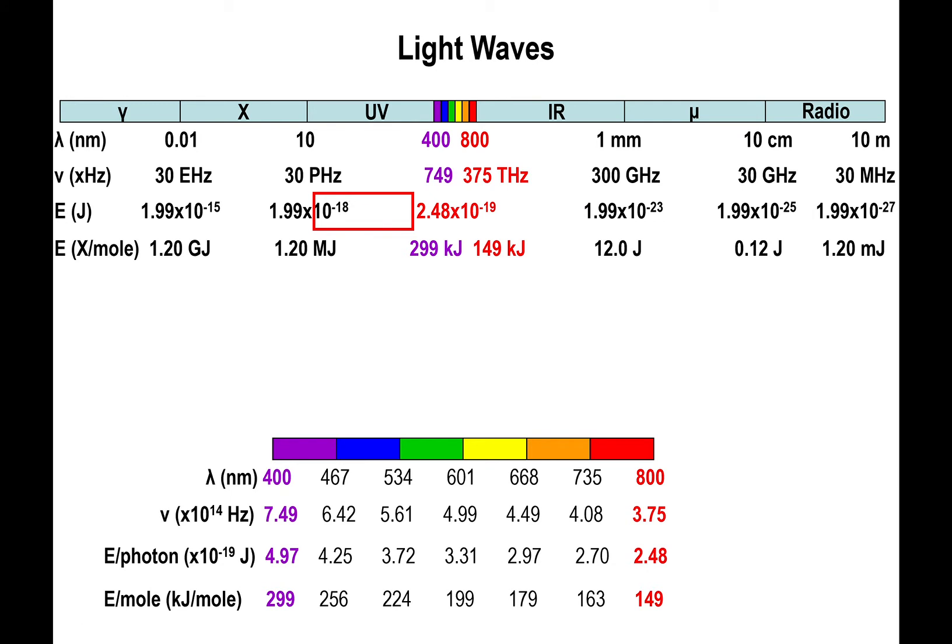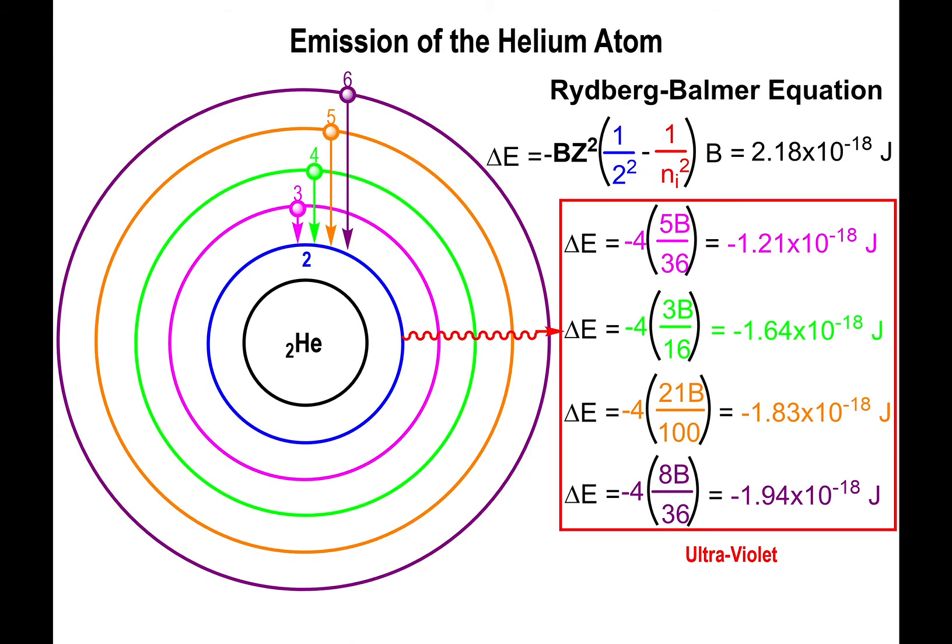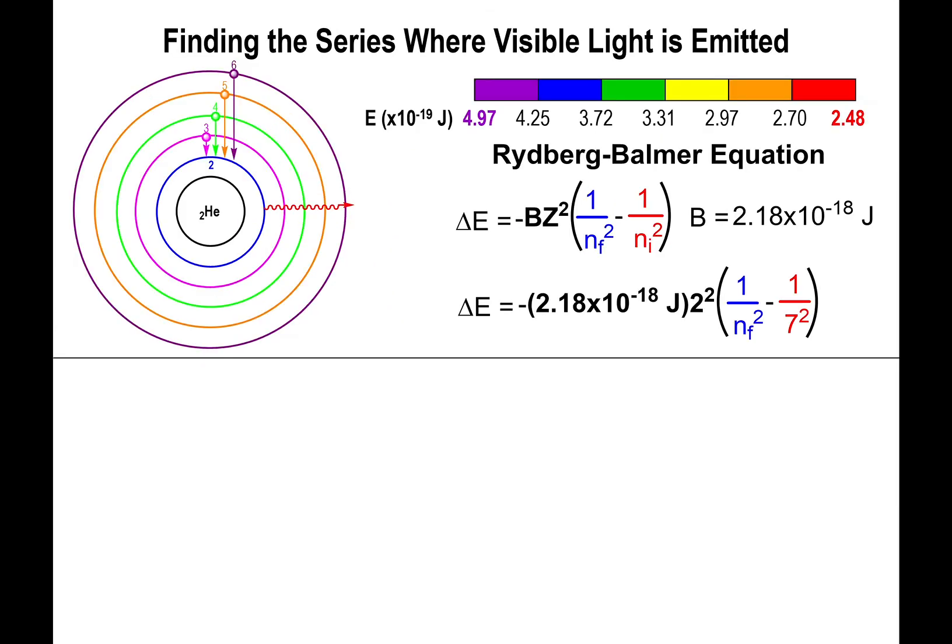So let's try to find out where visible light will actually be emitted. Now the process is kind of convoluted, you could say. There's a few other ways to do it, but I'll show you one. You could always plug in values for n_initial and n_final, get the value of the energy, and if it matches what's within the visible region, then you got visible light. I'm going to show you a different approach to doing this.